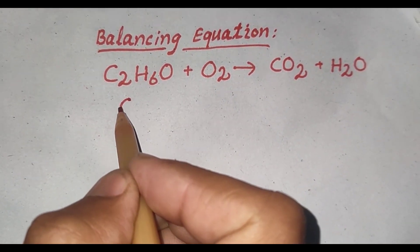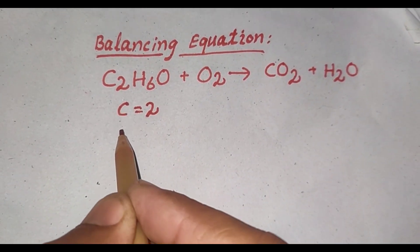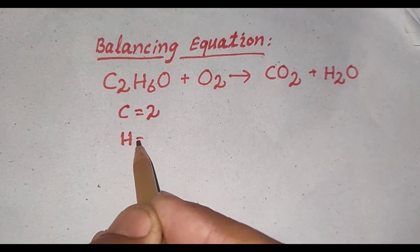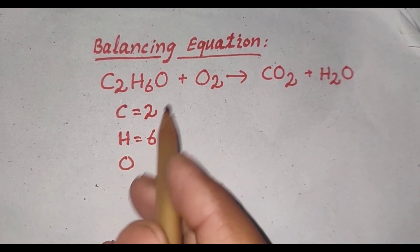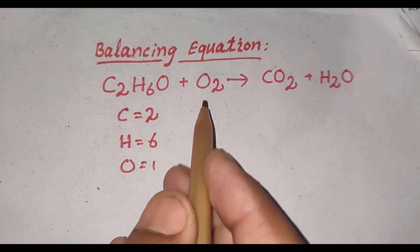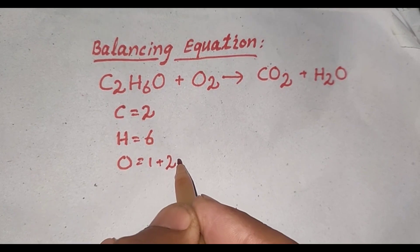The number of carbon atoms are 2, hydrogen atoms 6, oxygen atoms - 1 oxygen atom here and 2 oxygen atoms here, total 3 oxygen atoms.